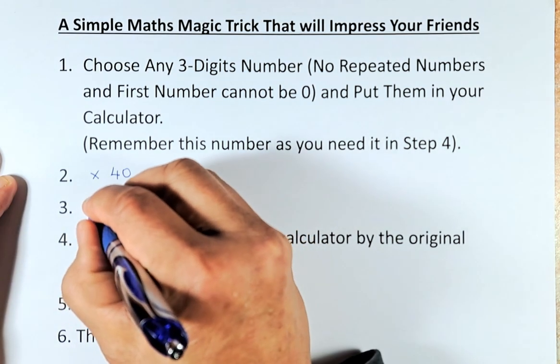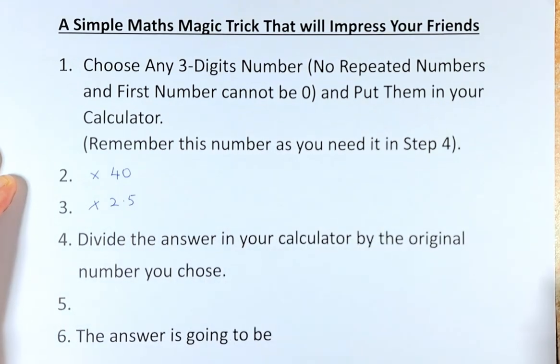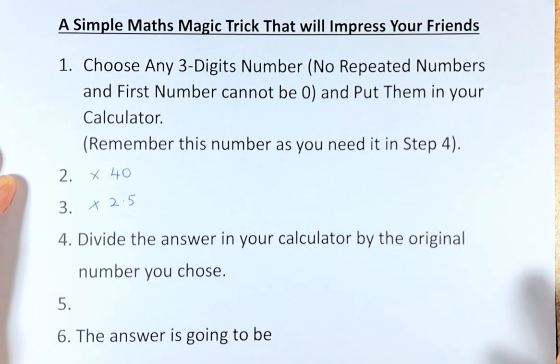Now, the next step, you're going to multiply by 2.5. Have you got that? Now you have a big number. You are going to divide the number in your calculator by the number you chose in step 1. Got it? Great.